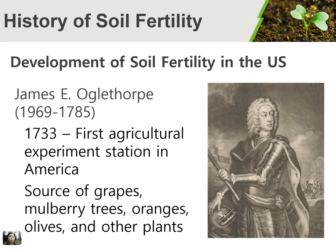Liebig authored Liebig's Law of Minimum, which states that if one essential nutrient is deficient, growth will be poor even if all other elements are abundant. He also said: 'Perfect agriculture is the true foundation of all trade and industry and is the foundation of the riches of nations, but a rational system of agriculture cannot be formed without the application of scientific principles and an exact acquaintance with the means of vegetable nutrition, which we must seek through chemistry.' James Oglethorpe established the first agricultural experiment station in America in 1733, which became a store of grapes, mulberry trees, oranges, olives, and other plants.